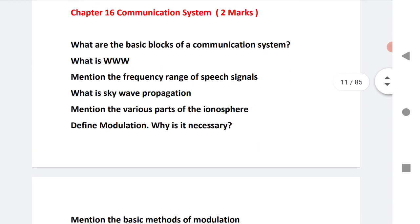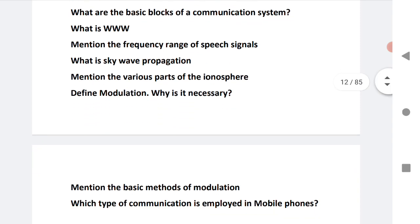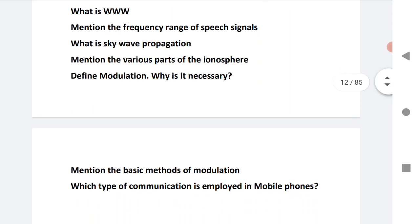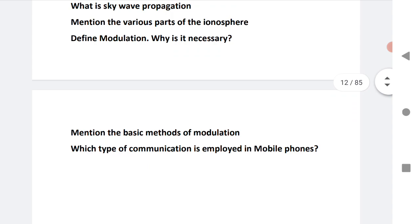Chapter 16 and the last chapter - communication system. What are the basic building blocks of communication? What is triple W? Mention the frequency range of speech signals. What is sky wave propagation? Mention the parts of ionosphere. Define modulation. Why is it necessary? Sky wave propagation - we are expecting this year this question may come. Mention the basic methods of modulation. Which type of communication is employed in mobile phones? I request the students, all these VSAQs and SAQs link is given in the description. LAQ link is given in the description, and the model paper is also given in the description. Check it.